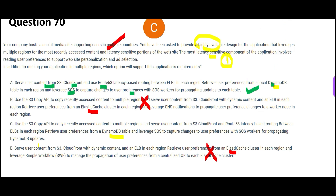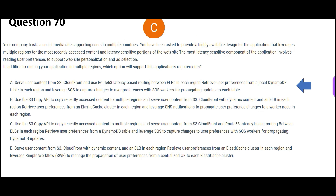The problem with Option C is that it tells you to use a copy API to copy recently accessed content to multiple regions. Whenever you try to do that, you will not be able to meet the latency-sensitive requirement. That seems to be the only difference between A and C, so C is wrong. Option A is my final answer.